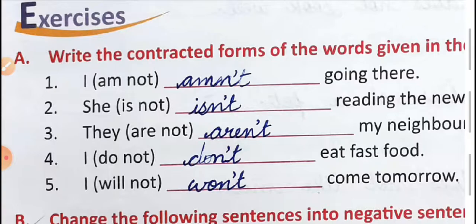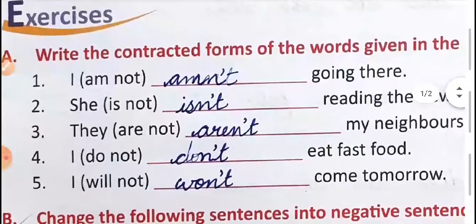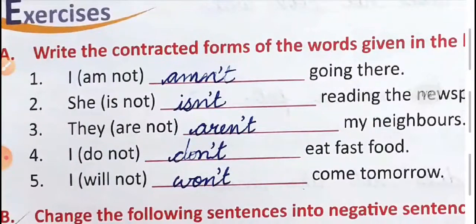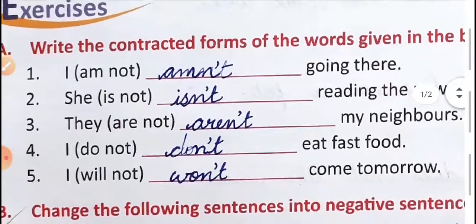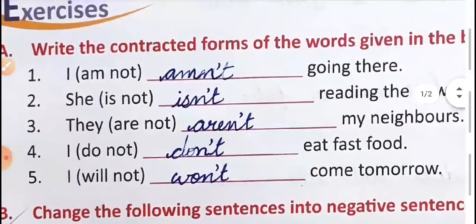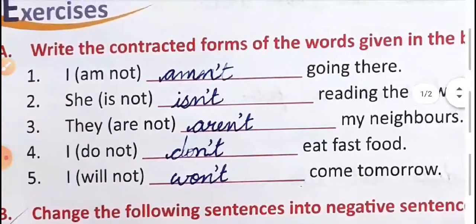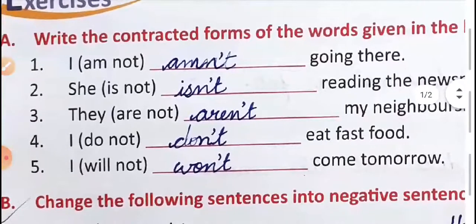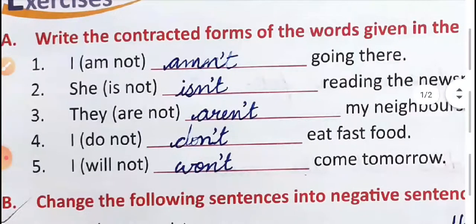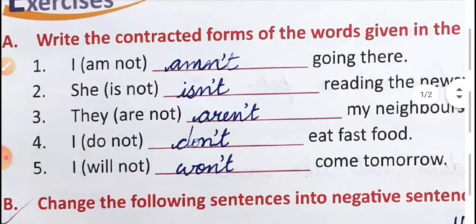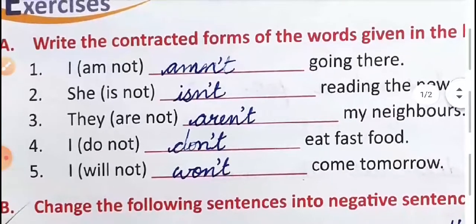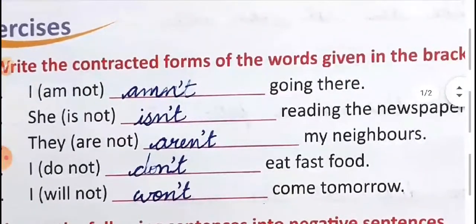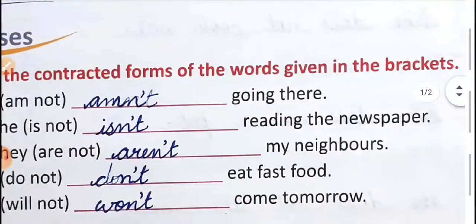Today we are going to discuss the exercise part of Lesson 4. Yesterday we learned how to make negative sentences, and today we are going to do the same lesson exercise part. Exercise A: write the contracted forms of the words given in the brackets.